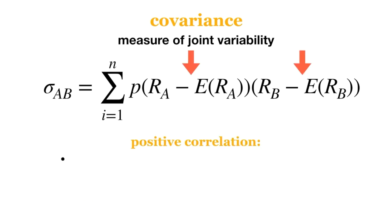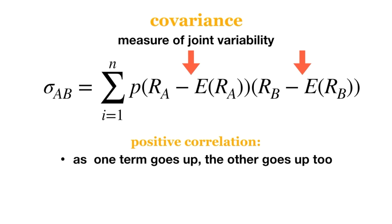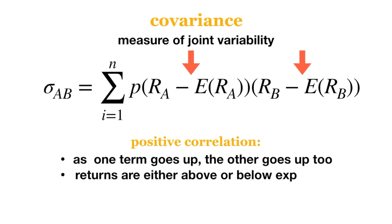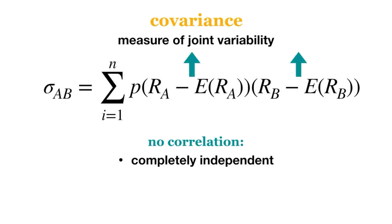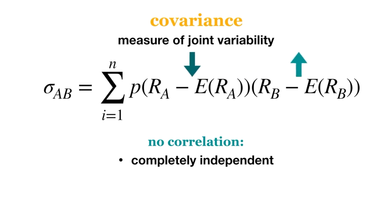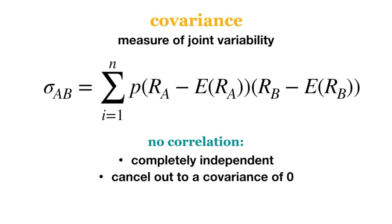If the correlation is positive, it means that as one term goes up, the other term also goes up. The returns are always either both above their expected returns or below. So we're always multiplying two negatives or two positives, resulting in a positive sum for covariance. And for assets with no correlation, returns are completely random and independent. Sometimes both will go up, sometimes both will go down, and sometimes one will go up while the other goes down. When we add all of these random values together, we can expect them to cancel out and leave us with a covariance of zero.